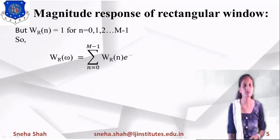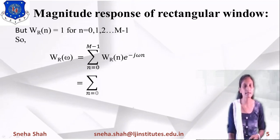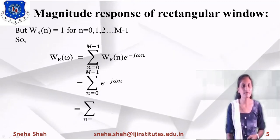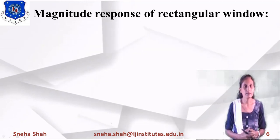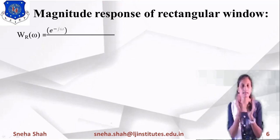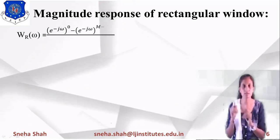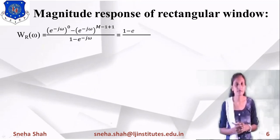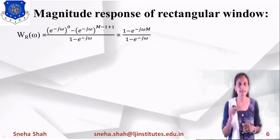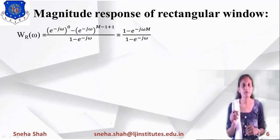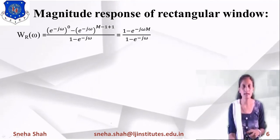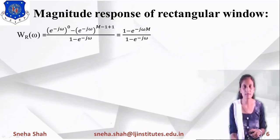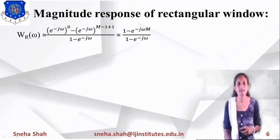This summation is in the form of A^n where A = e^{-jω}. Representing it as a geometric series: the sum from 0 to M-1 equals (A^0 − A^{M-1+1}) / (1 − A), which gives (1 − e^{-jωM}) / (1 − e^{-jω}). Since any term raised to 0 is 1, and −1+1 cancels out, the upper limit becomes M. So we get (1 − e^{-jωM}) / (1 − e^{-jω}).